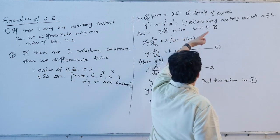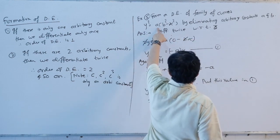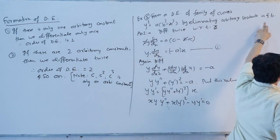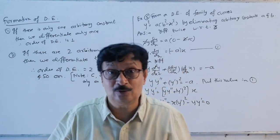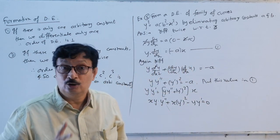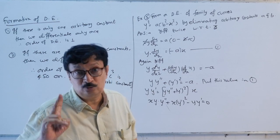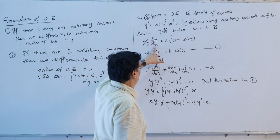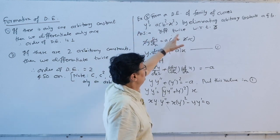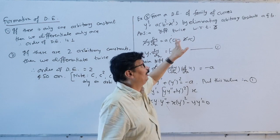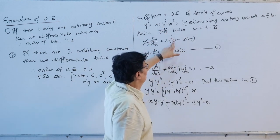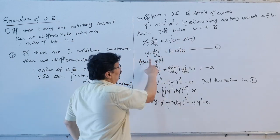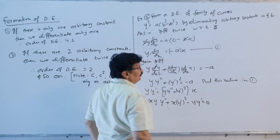Form the differential equation of the family of curves y² = A(B² - x²) by eliminating the arbitrary constants A and B. Since there are two arbitrary constants, we differentiate twice with respect to x. Differentiating: derivative of y² is 2y·(dy/dx); A is constant; derivative of B² is 0; derivative of x² is 2x. The 2s cancel, giving y·(dy/dx) = −x. This is equation 1.